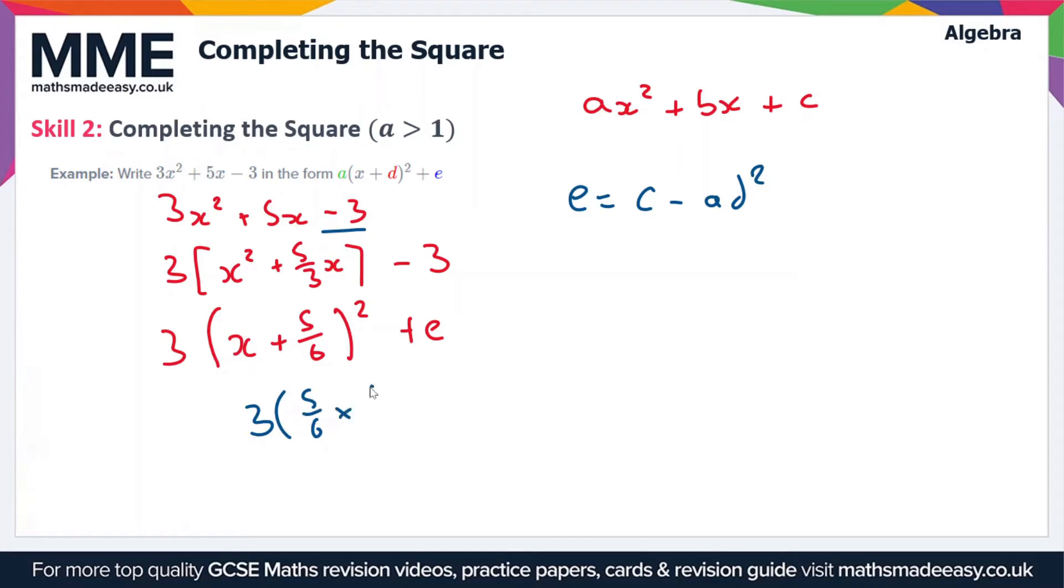Which simplifies to 25 over 12. So therefore our value of e is going to be equal to minus 3 minus 25 over 12. So we're almost there, let's just rub out these workings here so we don't need them anymore.